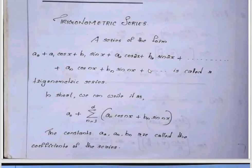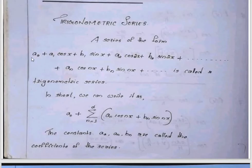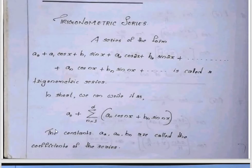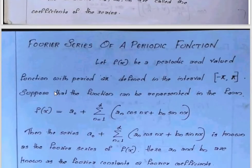Next is trigonometric series. A series of the form a0 plus a1 cos x plus b1 sin x plus a2 cos 2x plus b2 sin 2x, continuing to an cos nx plus bn sin nx, is called a trigonometric series. In sigma notation: a0 plus sigma from n equals 1 to infinity of (an cos nx plus bn sin nx). The a0, an, bn are the coefficients of the series.